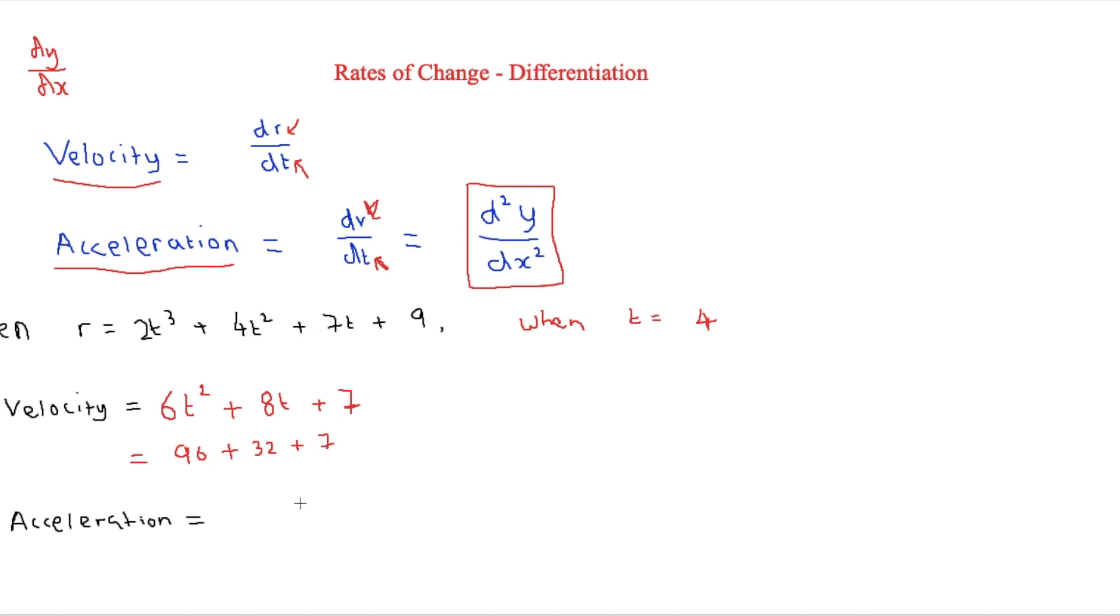And that would be 96 plus 32 is equal to 128, and that would be equal to 135. And that would be in meters per second, for example.